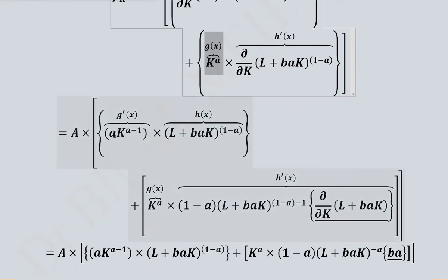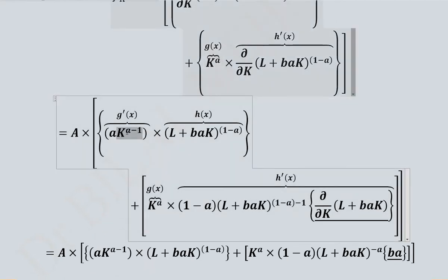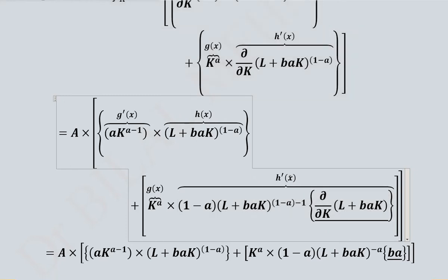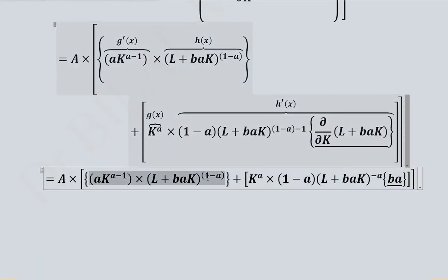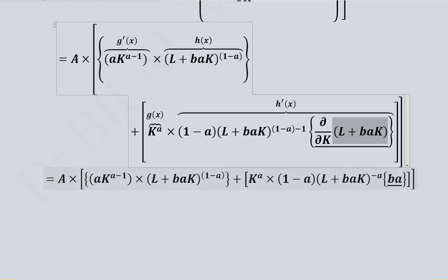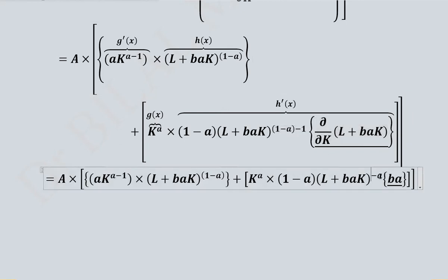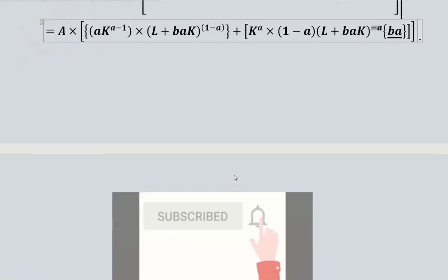Applying the product rule and simplifying the derivative terms: we differentiate K raised to power A using the power rule, and similarly differentiate the second term. After simplification, the first part and the second part after the plus sign are written out. Since labor is constant, its derivative is zero; the K derivative equals 1. Terms cancel, giving minus A as the remaining power.